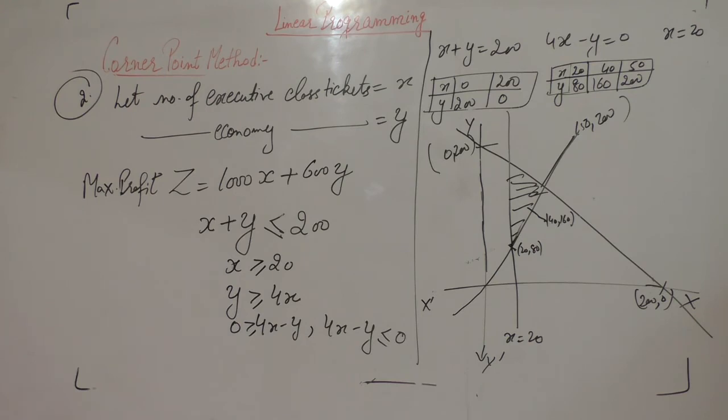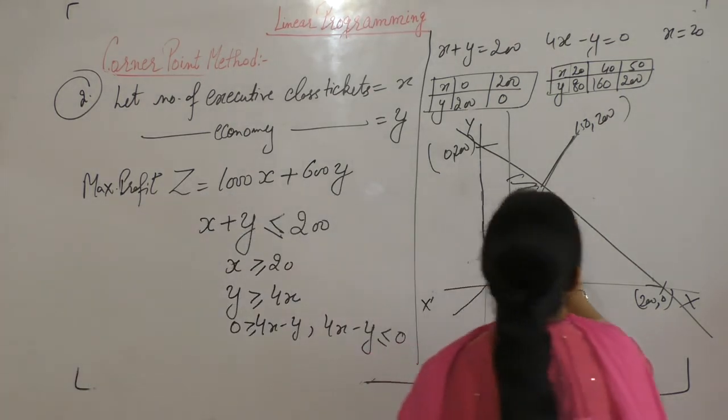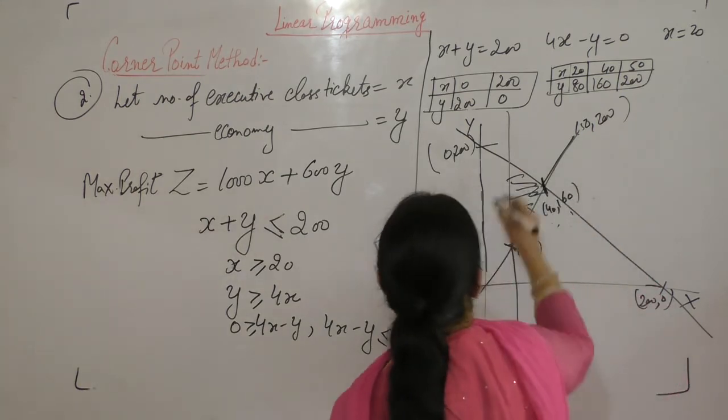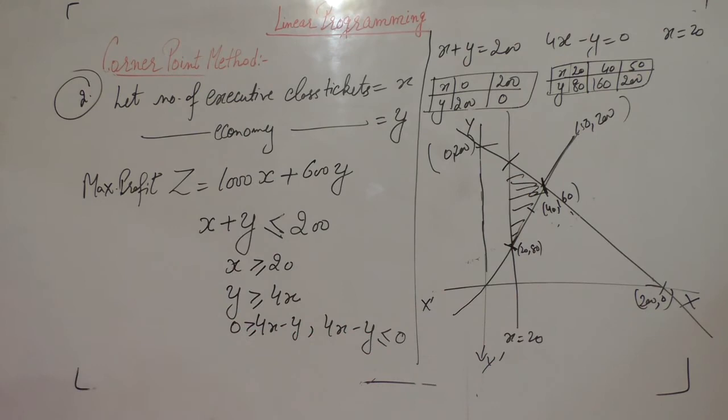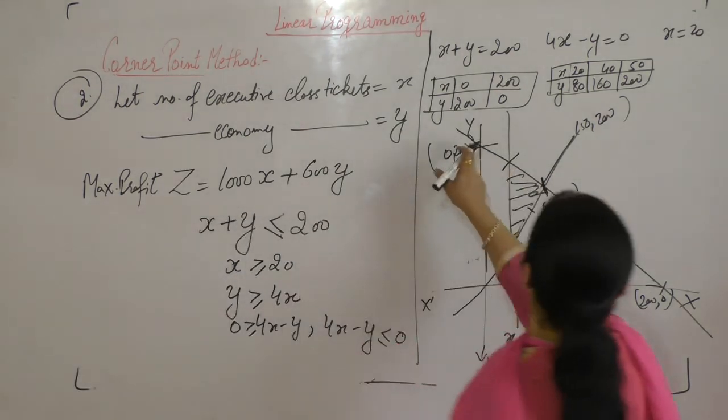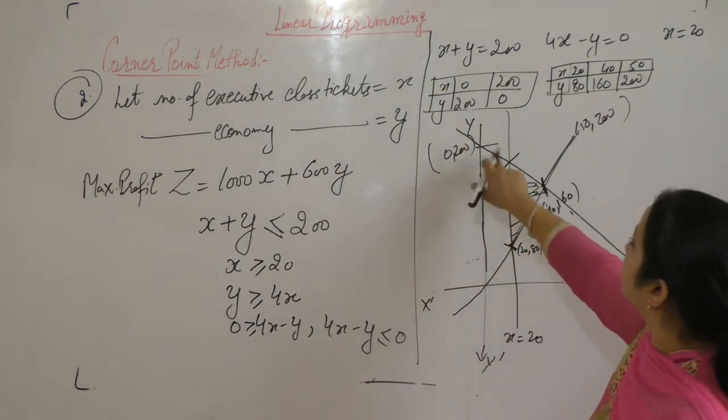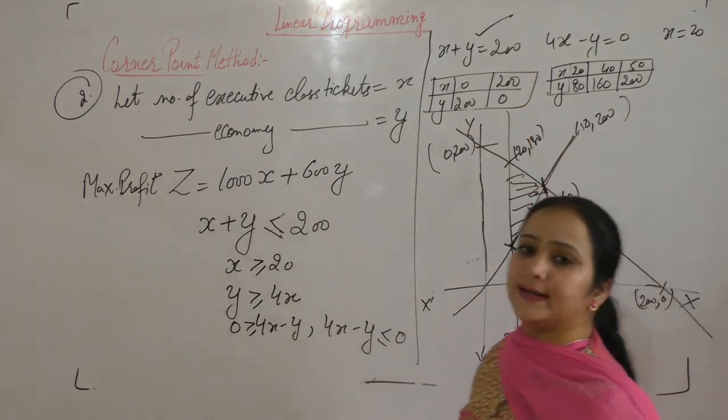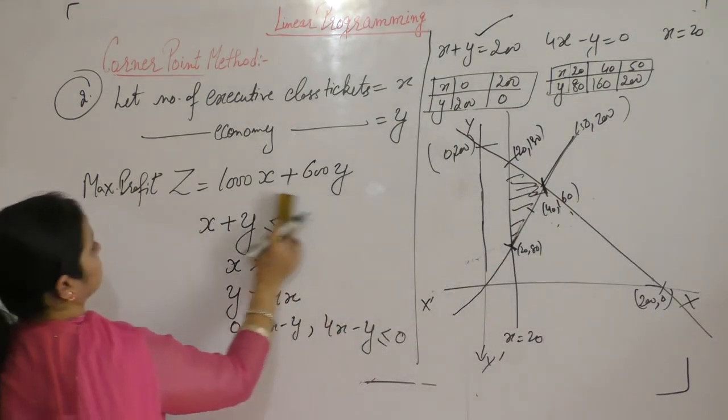Now the vertices of the feasible region are 40, 160, then 20, 80, and 20, 180. Now we are going to find this point. When x is 20, y is 180. Put this value in the equation x plus y equals 200.